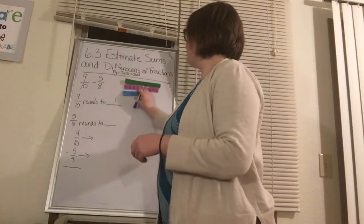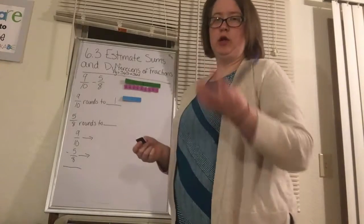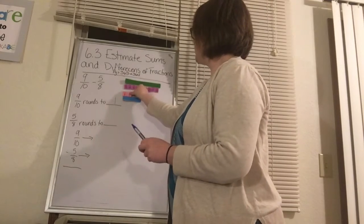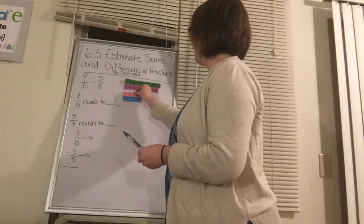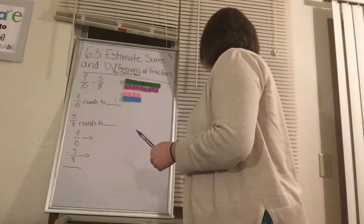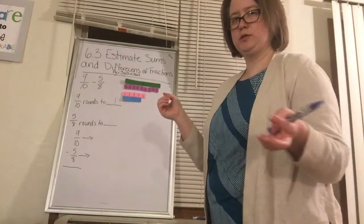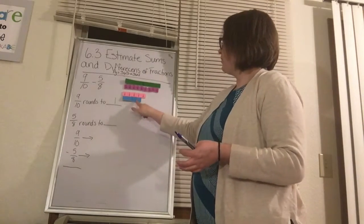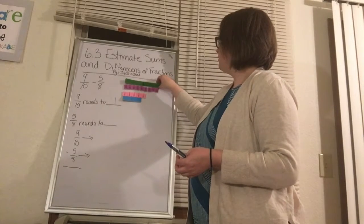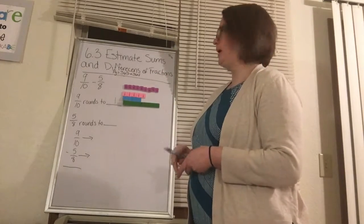We're going to do the same thing with the 5/8. You may be able to look at it and know which one it's closest to, but you might not. So we're going to do 1, 2, 3, 4, and 5. Which one is it closest to? Well, it's a little bit bigger than the 1/2, but it's a lot closer to the 1/2 than it is to the whole. If you move this down and look at it, so it's going to round to 1/2.